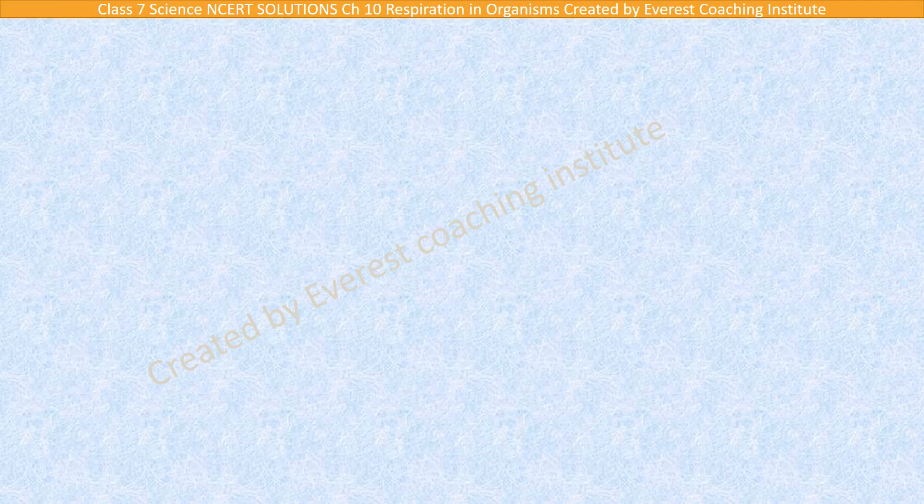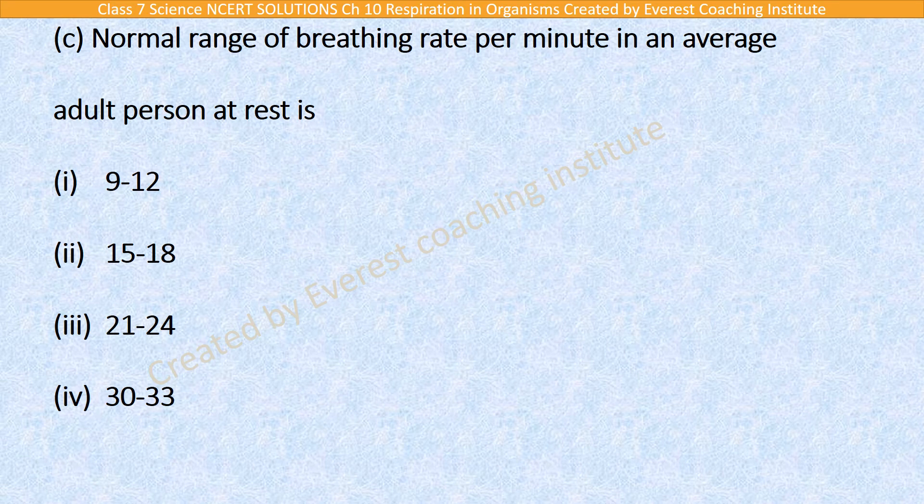Come to question 5 part 3: The normal range of breathing rate per minute in an average adult person at rest is: 9 to 12, 15 to 18, 21 to 25, or 32 to 33. The normal breathing rate is 15 to 18 times per minute for a normal average adult person.